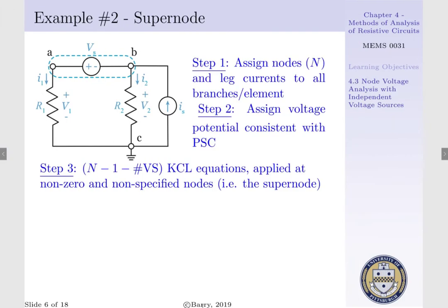Step 3 is to construct our KCL equations. We need N, the number of nodes, less unity, less our number of voltage sources. That is, we need one KCL equation applied at non-zero and non-specified nodes, i.e., we will apply our KCL equation to our supernode.